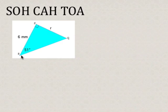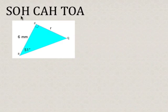Now, for triangle PQR, we are given an angle measurement and a side length of the right angle triangle, and we need to find a missing side length, which is R. So what we're going to use is the primary trig ratios, which are given by the acronym SOHCAHTOA, in order to determine the value of R.